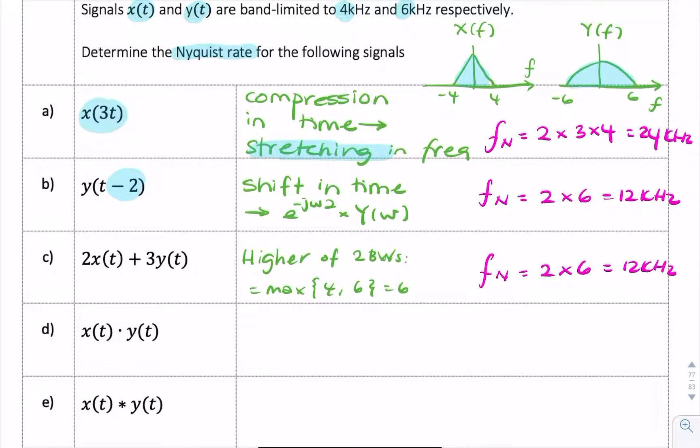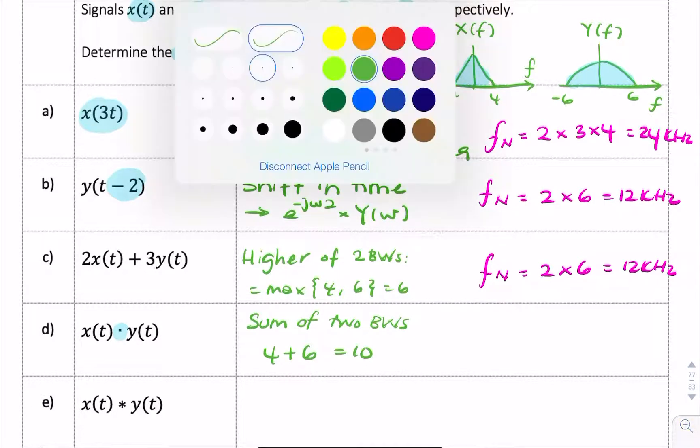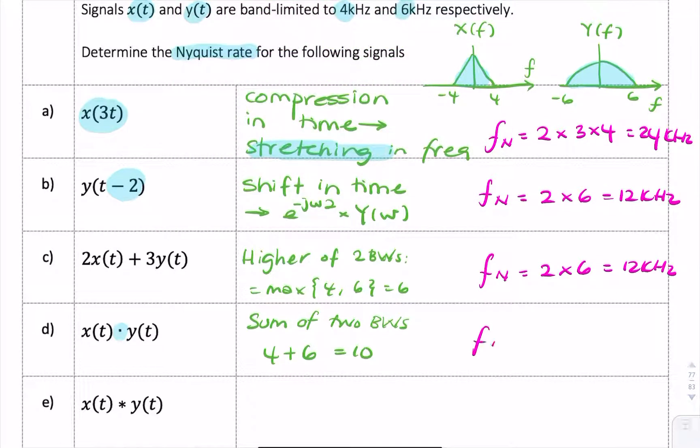Okay, for D, we have the product of X and Y. And remember we said the rule of thumb is when you multiply signals, you take the sum of the two bandwidths. So you'll take 4 plus 6 equals 10, and the Nyquist rate is twice that, 20 kilohertz.